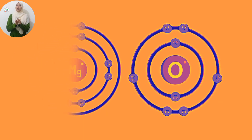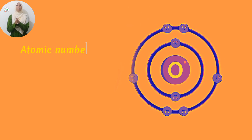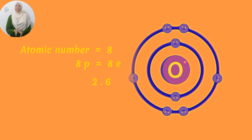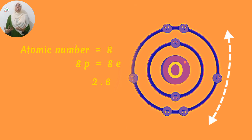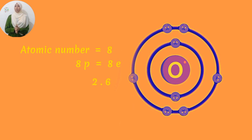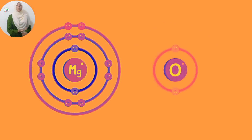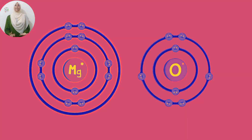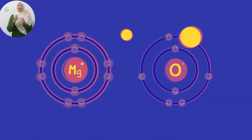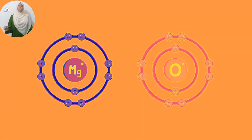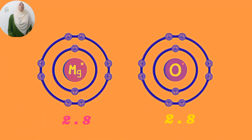Now moving on to the oxygen atom. Oxygen has an atomic number of 8 and an electron configuration of 2, 6. If an atom has 4 or more electrons in its outermost energy level, it never loses those electrons — it simply gains more to have an octet energy level. So in the case of oxygen, it will gain 2 electrons in order to form a full octet energy level of 2, 8.